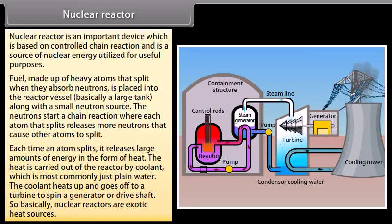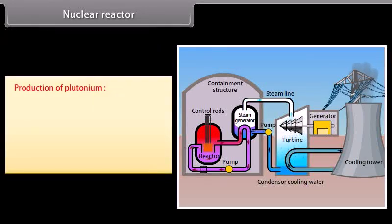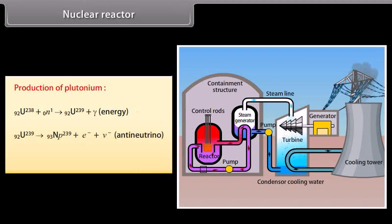in a generator or drive shaft. So basically nuclear reactors are exotic heat sources. Production of plutonium: some fast neutrons produced in the reactor are absorbed by Uranium-238. As a result it is converted into an unstable isotope Uranium-239. Uranium-239 emits a beta particle and is converted to Neptunium-239. Neptunium also emits a beta particle and is spontaneously converted into Plutonium-239.